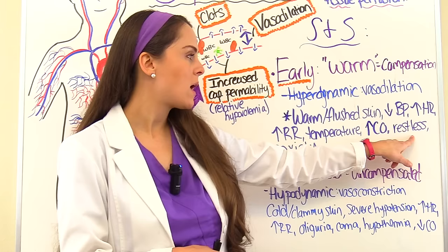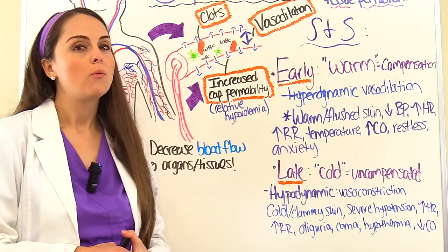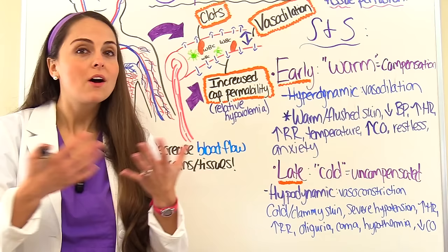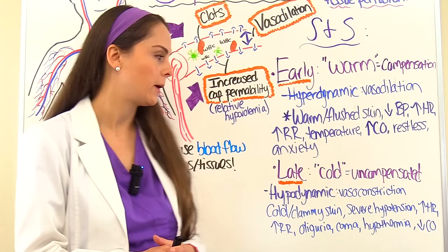As septic shock progresses, we move out of compensation into the uncompensated late stage — this is called the cold stage of septic shock. The patient is now hypodynamic and all systems are really failing. Skin will be cold and clammy due to vasoconstriction, as things are just not being perfused because the heart is failing.